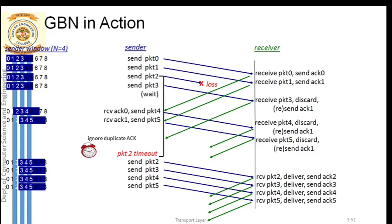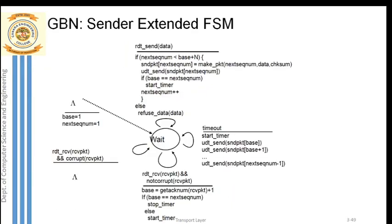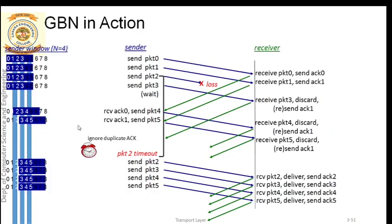Now let's look at the FSM - finite state machine - of Go-Back-N. Concentrating on the sender side: initially the sender will initialize two pointers. What are the two pointers? Base and next sequence number. Base will always point to the first packet in the window, while next sequence number points to the next packet that should be transmitted.